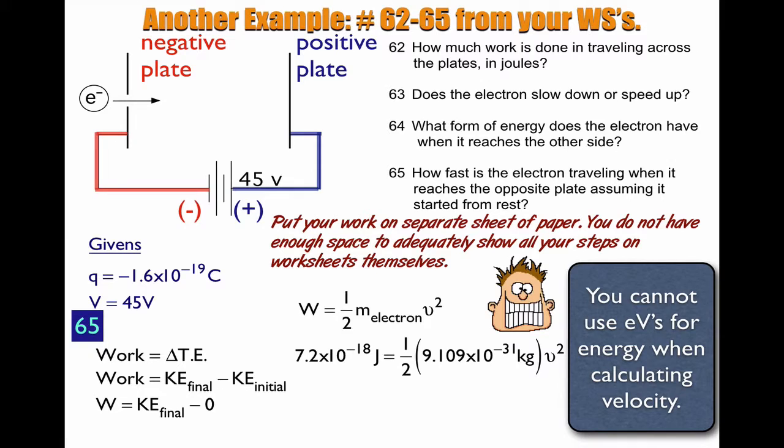So 7.2 times 10 to the negative 18 joules is equal to one half, 9.109 times 10 to the negative 31 kilograms, times V squared. Solving for the velocity gives me a really big number. 3,975,995.6 meters per second. Ignoring sig figs here.